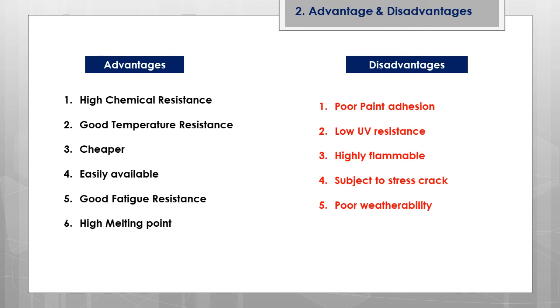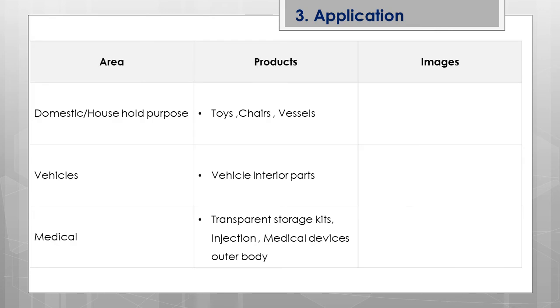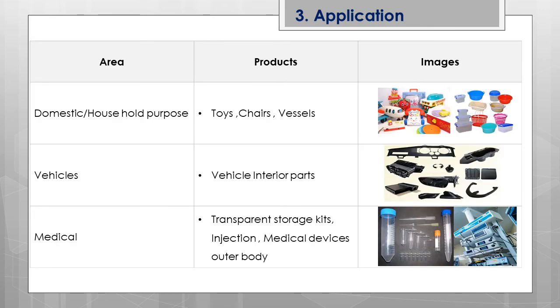PP applications are categorized into three main areas. In domestic and household use, products include toys, chairs, and vessels, owing to PP being one of the safest plastics. In the automotive sector, it is used in vehicle interiors due to its good scratch resistance and chemical resistance. In medical applications, it is used for transparent storage kits, injection components, and medical device outer bodies.